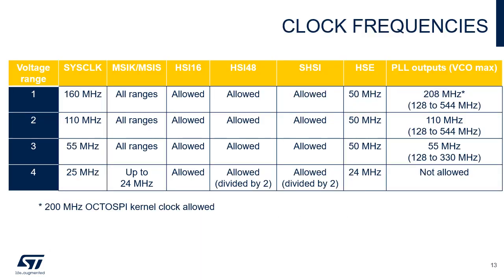This table indicates the maximum frequencies according to the voltage ranges. In voltage range 1, the maximum performance is obtained: a 160 MHz system clock, and possibly 200 MHz for the OctoSPI kernel clock. In voltage range 2 and 3, the maximum system frequency is respectively 110 and 55 MHz. In voltage range 4, the maximum frequency is 25 MHz and must be provided by an oscillator, as PLLs are disabled.